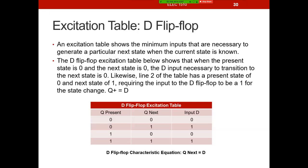An excitation table shows the minimum inputs that are necessary to generate a particular next state when the current state is known. In other words, what kind of circuitry do we need to attach to the input of the flip-flop to derive the next state value?